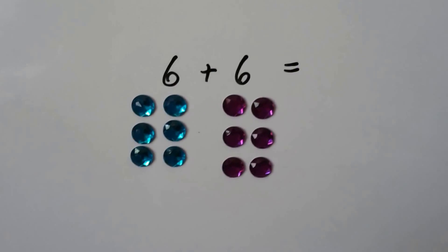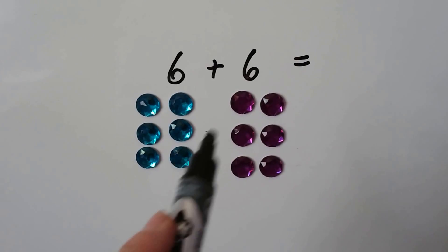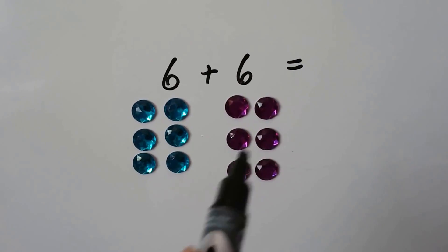Double sixes. That's six plus six. We have six, seven, eight, nine, ten, eleven, twelve.